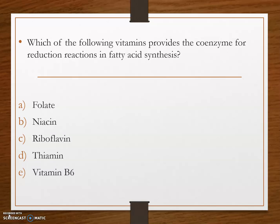Next question: which one of the following vitamins provides the coenzyme for reduction reactions in fatty acid synthesis? Options are: option A, folate; option B, niacin; option C, riboflavin; option D, thiamine; and option E, vitamin B6. The answer is option B, niacin. The reduction reactions in fatty acid synthesis use NADPH, which is a niacin derivative. So niacin provides the coenzyme for reduction reactions in fatty acid synthesis.